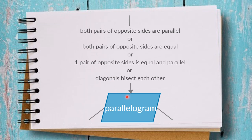The second way is that both pairs of opposite sides are equal — you have to prove two pairs equal. The third way is that one pair of opposite sides is both equal and parallel at the same time. For example, choose this pair: prove them equal and also prove them parallel — two things to prove for the same pair.